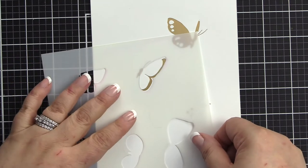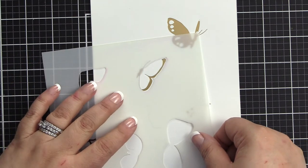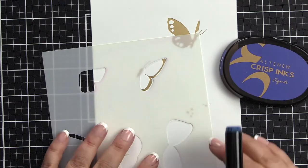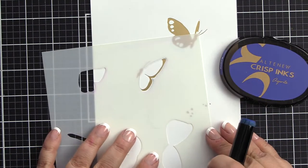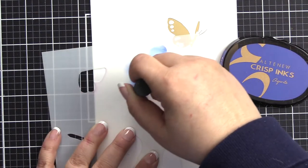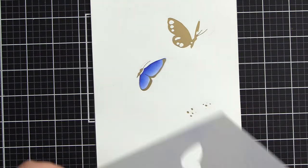I've peeled off the hot foil and now I'm laying the stencil down. I'm curving that open space against the back curve of the butterfly. Then I will take my mini blending tool with azurite ink and blend on.